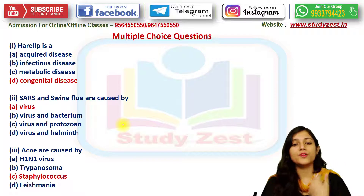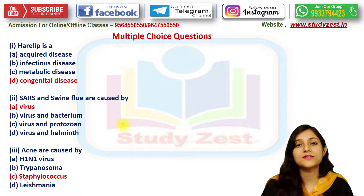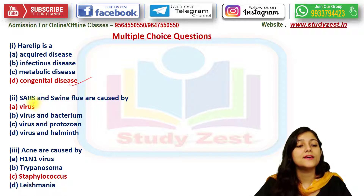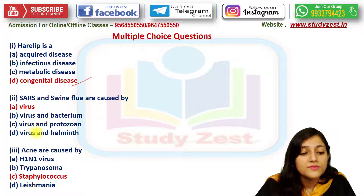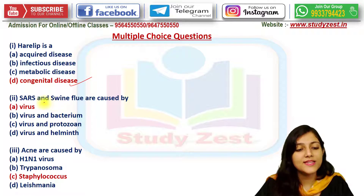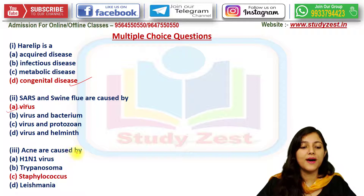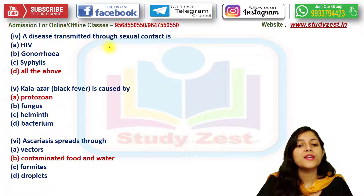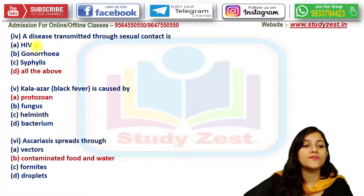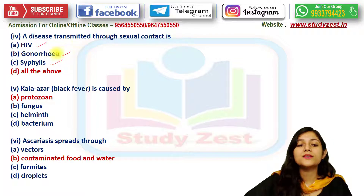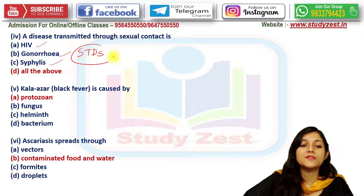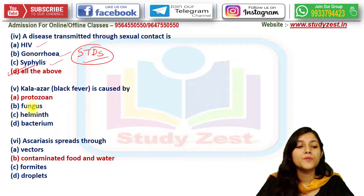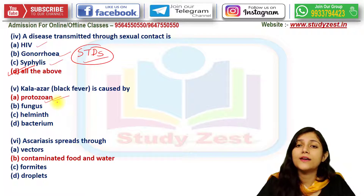As the chapter is now completed, we move to the MCQ session. First: Harelip is a congenital disease. SARS and Swine Flu are caused by a virus. Acne are caused by Staphylococcus. A disease transmitted through sexual contact — HIV/AIDS, gonorrhea, and syphilis are all STDs (sexually transmitted diseases), so the answer is all of the above. Kala-azar or black fever is caused by a protozoan.